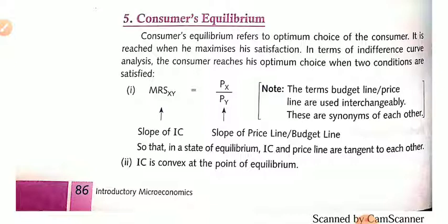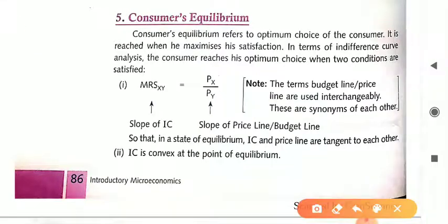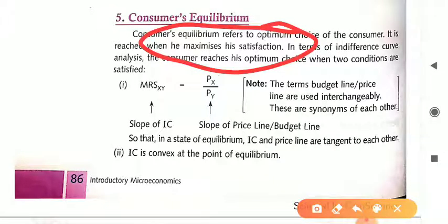We all know that consumer equilibrium refers to the point where a consumer gets the maximum satisfaction by spending his given income on the prevailing market price of different goods and services. It simply represents consumer equilibrium. The basic point to keep in mind is the maximization of satisfaction by the consumer. This is the core point of consumer equilibrium.